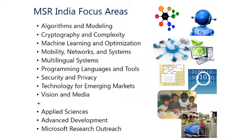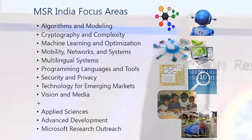In Microsoft Research India, we have a lab of about 50 to 60 people working on a variety of areas — from foundations of computer science to distributed systems, natural language processing, machine learning, and many more. We also have a group of engineers doing advanced development, applied scientists who work closely with product groups, and something called Microsoft Research Outreach, which I'll talk about in a moment.